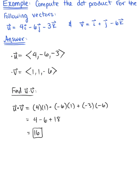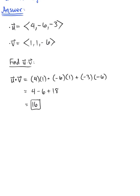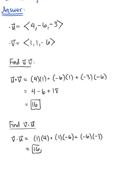And now let's go ahead and let's see what happens if we multiply them in the reverse order. So now we'll go ahead and we'll find vector v dot vector u. So here we go. We have vector v dotted with vector u. So this would be 1 times 4 plus 1 times negative 6 plus negative 6 times negative 3. And hopefully you're observing there's absolutely no change. We end up with the same answer, 16.